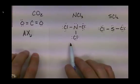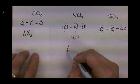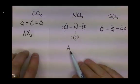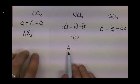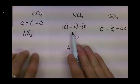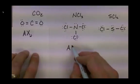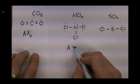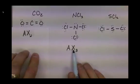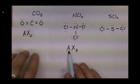Let's look at nitrogen trichloride. In nitrogen trichloride, we represent the nitrogen in the center again with the letter A — this is always going to represent the central atom. We have three atoms of chlorine bonded to the central atom, so we represent X with a subscript 3, meaning there are three atoms bonded to our central atom.